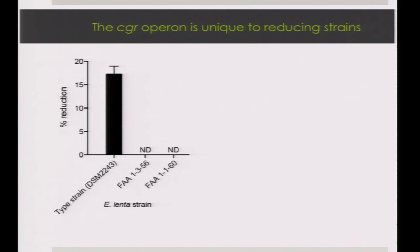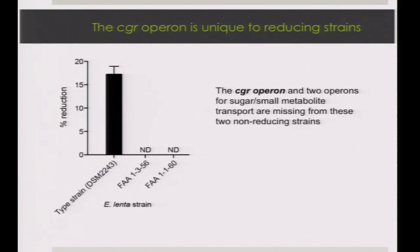Unfortunately, we don't yet have bacterial genetics for E. lenta to knock out the operon directly. So we took a comparative genomic approach. Thanks to the HMP and other large-scale genome sequencing projects, we had three closely related E. lenta strains that had been fully sequenced. Only the type strain could inactivate digoxin; the other two FAA strains could not. When we compared whole genomes, the non-reducing strains lacked the CGR operon and were also missing other interesting genes — particularly two operons potentially for import of sugars and small metabolites.